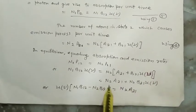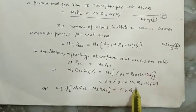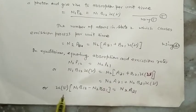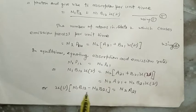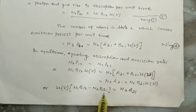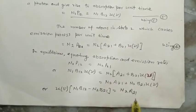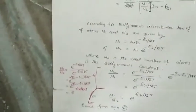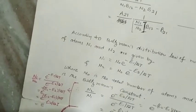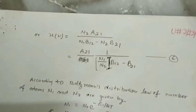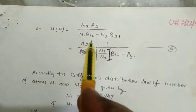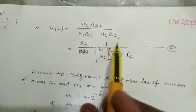Opening this bracket: N2·A21 + N2·B21·U(ν). Taking U(ν) common: N1·B12 - N2·B21 = N2·A21. Therefore, U(ν) = N2·A21/(N1·B12 - N2·B21).